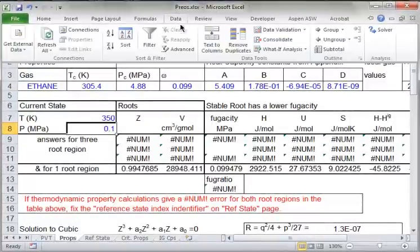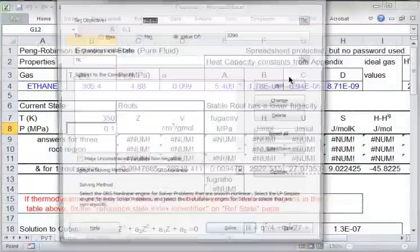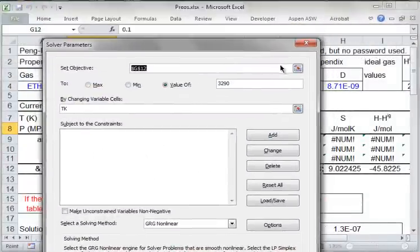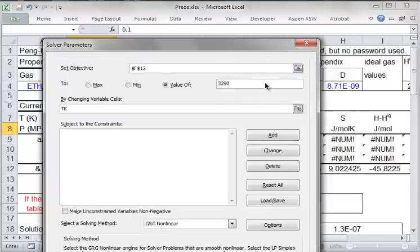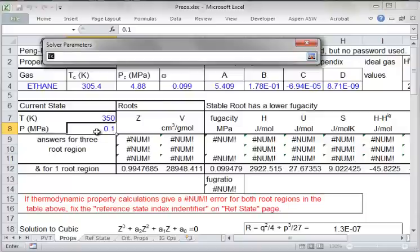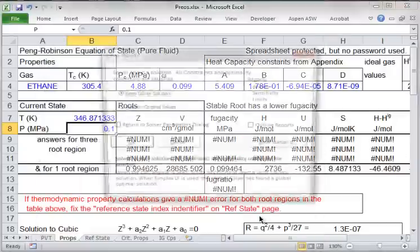So I pull down Solver, and I'm going to adjust H to a value of 2736 by changing TK. I want to always make sure that's the temperature indeed that I want. And Solve.